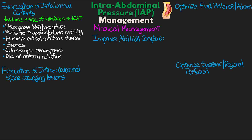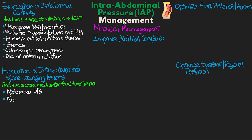Next we're going to talk about the evacuation of intra-abdominal space-occupying lesions. Here we need to identify and evacuate any problematic fluid collections in the abdomen. This could apply to tumors and hernias, but could also be from bleeding, ascites, pancreatitis, an infection or abscess, or other potential causes. We're going to start with an abdominal ultrasound to try to identify any possible lesions, then consider an abdominal CT scan to better identify them. If appropriate, we would start with a percutaneous catheter drainage of a particular lesion. If that's ineffective or not warranted, then we'd consider surgical evacuation.